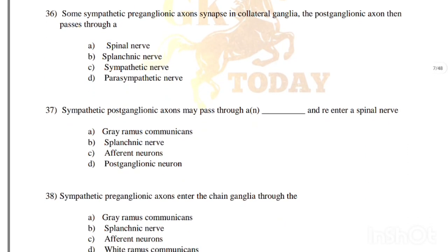Some sympathetic preganglionic axons synapse in collateral ganglia. The postganglionic axon then passes through a: spinal nerve, splanchnic nerve, sympathetic nerve, or parasympathetic nerve. Correct answer is option B, splanchnic nerve.